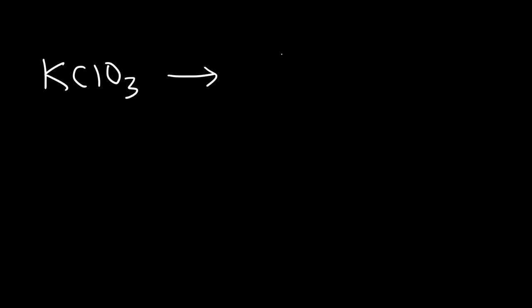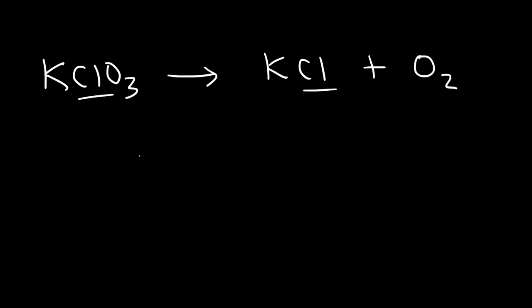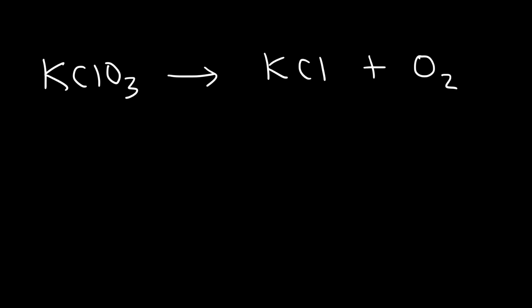Now let's look at another example. Potassium chlorate, when heated, decomposes into potassium chloride plus oxygen gas. Right now we have 1 potassium atom on both sides and the number of chlorine atoms are the same. The only thing that's different is the number of oxygen atoms. 2 × 3 = 6, so we want 6 oxygen atoms on both sides. We put a 2 in front of KClO₃ (2 × 3 = 6) and a 3 in front of O₂. Now we have 6 oxygen atoms on both sides. We also have a 2 in front of K and Cl, so we put a 2 in front of KCl. Now everything is balanced. Some problems will not be difficult, but others will be harder.